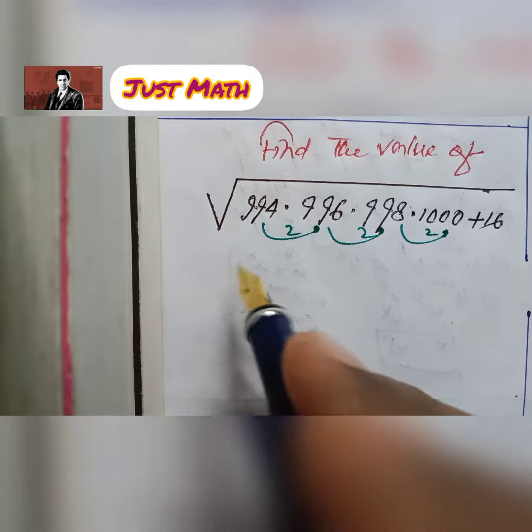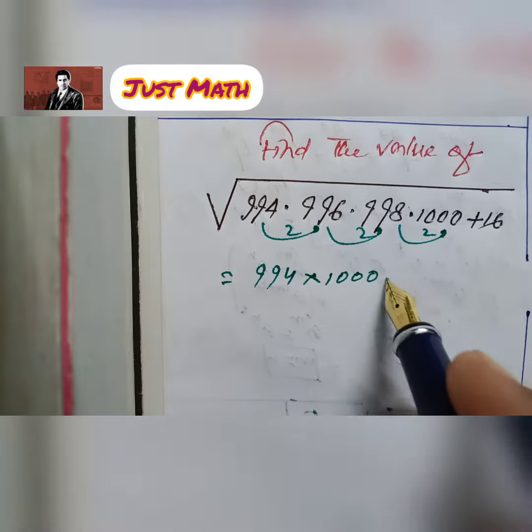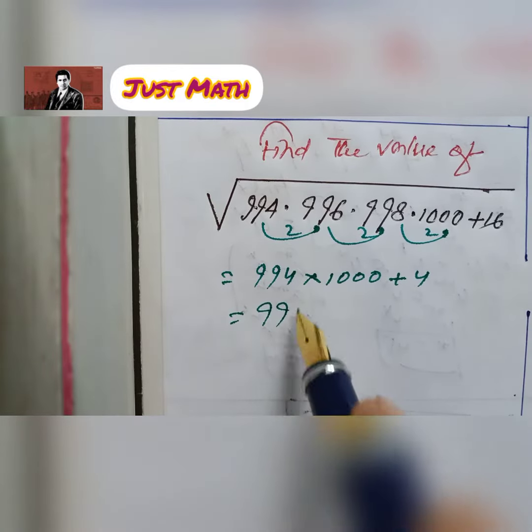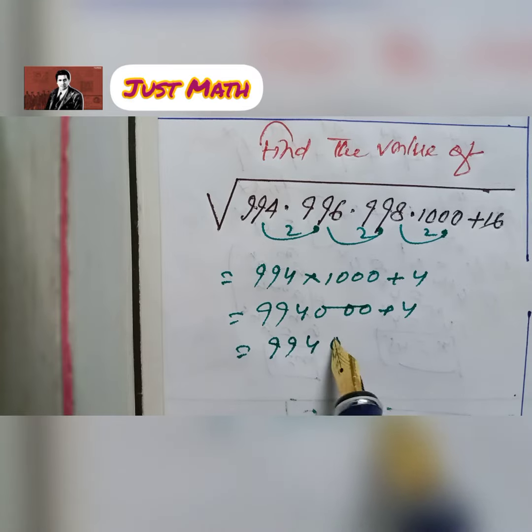So, the result is 1st number multiply last number plus 4. 994 × 1000 plus 4.